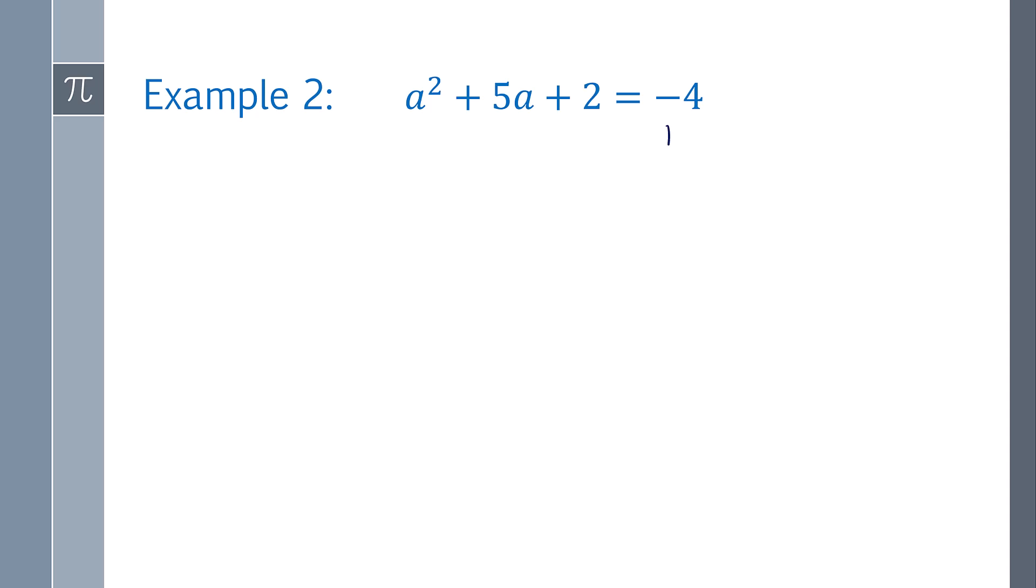This next one, so I want it to equal 0, so I'm going to add 4 to the other side. So now a times c, that gives me 1 times 6 is 6. Factors of 6 that add to 5. So we get 2 and 3, so a squared plus 2a plus 3a plus 6 equals 0.